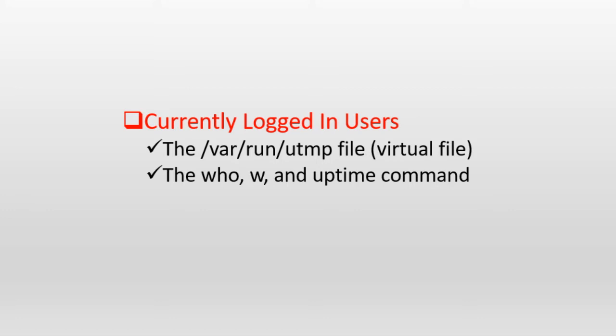The process here means any program or command that the user is running. The UTMP file also maintains the system boot timestamp information, which includes the current system time, the length of time the system has been up for, a count of the users that are logged on, and an estimate of the average CPU performance over the past 1, 5, and 15 minutes. Since this file is located under /var/run, which is used by Linux to store runtime information of the system, its contents are destroyed at system shutdown and repopulated with new data when users begin to log on after a system reboot.